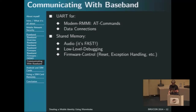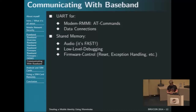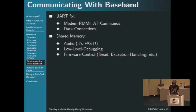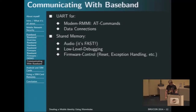You have the baseband and the application processor running Android. How does the baseband communicate with the rest of the phone? There are two main methods: UART — more like a serial connection — used for AT commands and data connections like GPRS. The more interesting part is the shared memory, which is fast. You can use it to transfer audio data, for low-level debugging, and MediaTek uses it to control the firmware — the Android system can reset the baseband firmware and handle baseband exceptions.